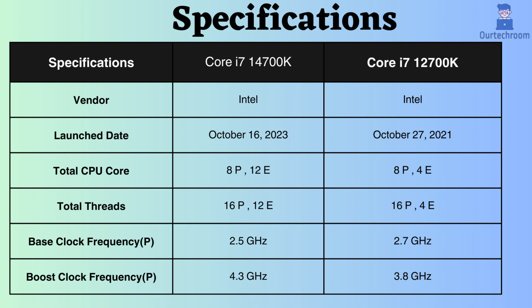The base clock frequency of the Intel Core i7-14700K is 2.5 GHz, whereas that of the i7-12700K is 2.7 GHz. Consequently, for typical CPU loads, the i7-12700K appears to exhibit slightly better performance. However, the boost clock frequency of the Intel Core i7-14700K is 4.3 GHz, surpassing the Core i7-12700K's 3.8 GHz. Consequently, under heavy CPU loads, the Core i7-14700K outperforms the i7-12700K.